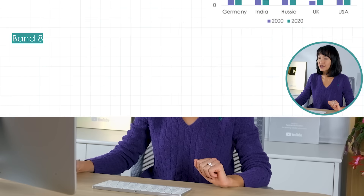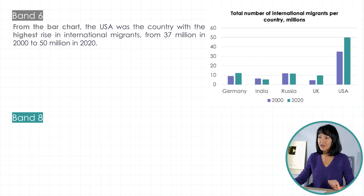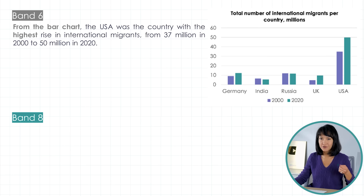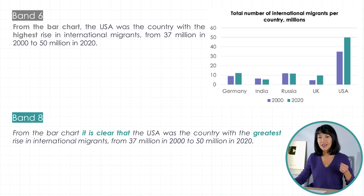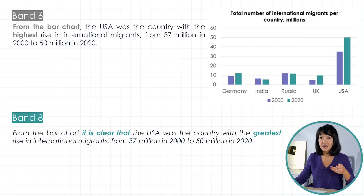Now let's read the paragraph about the bar chart. 'From the bar chart, the USA was the country with the highest rise in international migrants, from 37 million in 2000 to 50 million in 2020.' In the first sentence, I changed just a couple of words — not just 'from the bar chart', but 'from the bar chart it is clear that...' And the rise: it's better to say 'the greatest rise' than 'the highest rise'. It's a collocation.